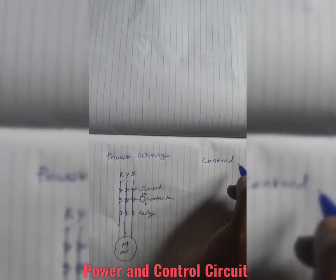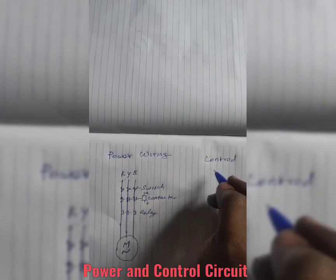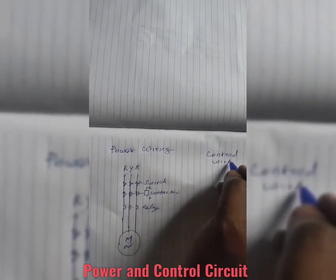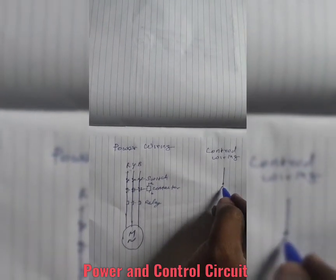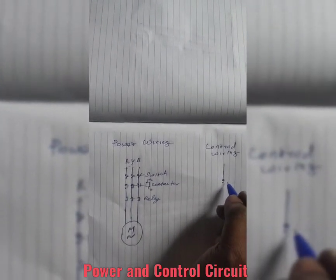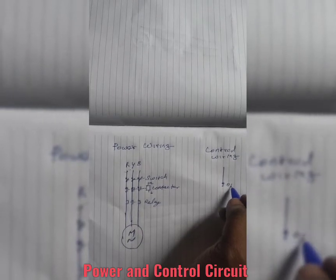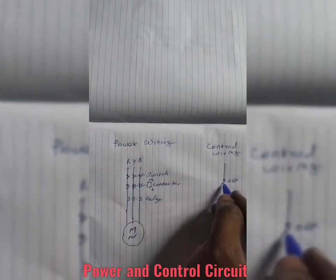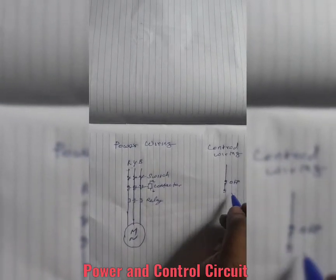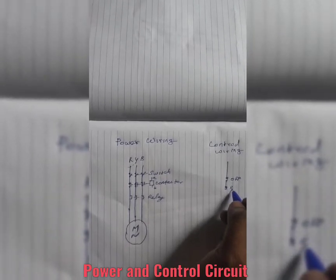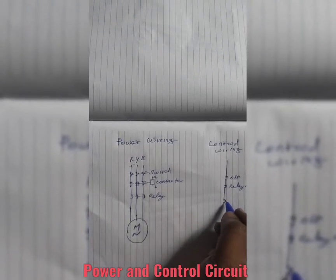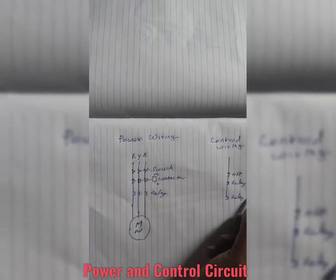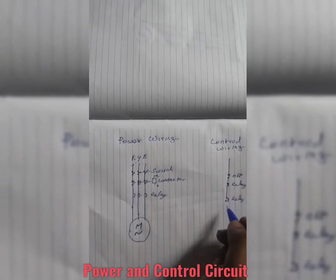Also, one more thing is available in the power circuit: the overload relay. In case the motor gets overloaded, the relay contacts the control points will open. That will be explained in the control circuit. Now we will see about the control circuit.